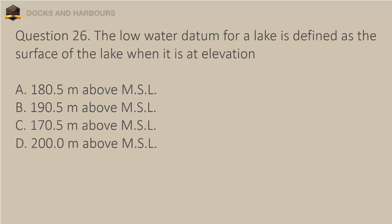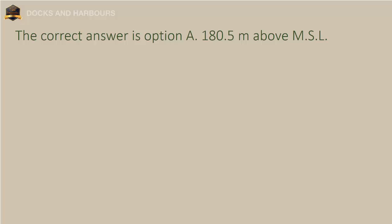Question 26. The low water datum for a lake is defined as the surface of the lake when it is at elevation: A. 180.5 meters above MSL, B. 190.5 meters above MSL, C. 170.5 meters above MSL, D. 200.0 meters above MSL. The correct answer is option A: 180.5 meters above MSL.